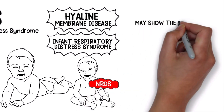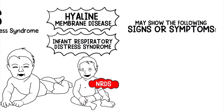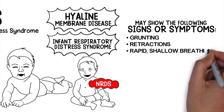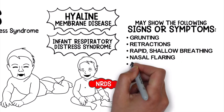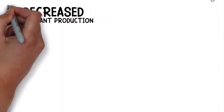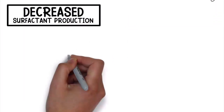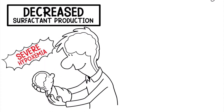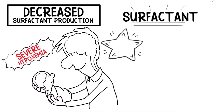An infant with neonatal respiratory distress syndrome may show the following signs and symptoms: grunting, retractions, rapid shallow breathing, nasal flaring, apnea, and/or tachycardia. This condition is usually associated with decreased surfactant production at birth, which results in severe hypoxemia.